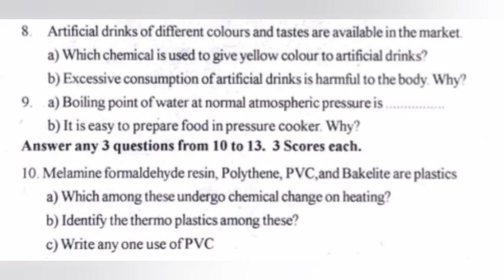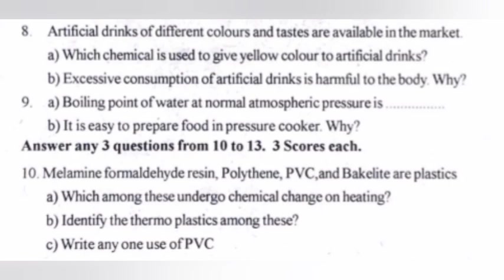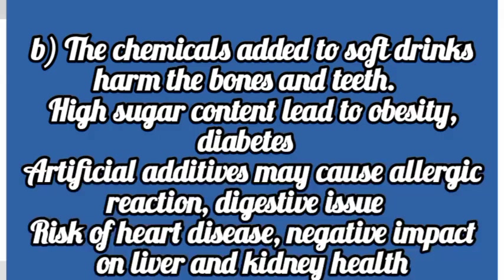Artificial drinks of different colors and taste are available in the market. A: Which chemical is used to give yellow color to artificial drinks? Answer: Tartrazine. B: Excessive consumption of artificial drinks is harmful to the body. Why? Answer: The chemicals added to soft drinks harm the bone and teeth.